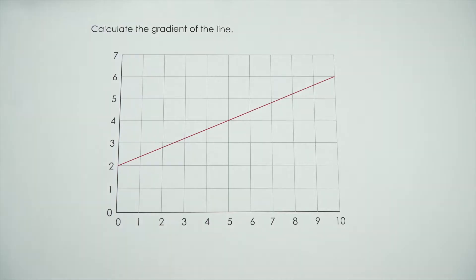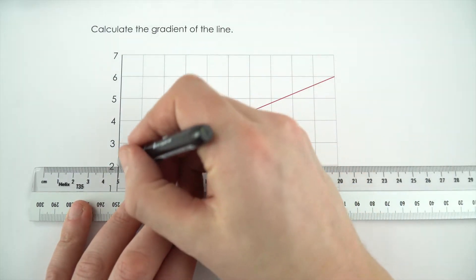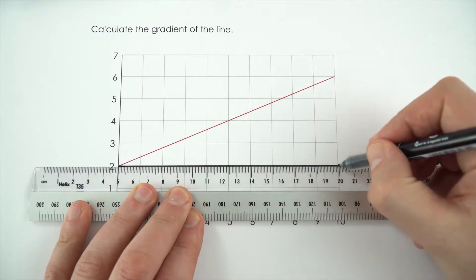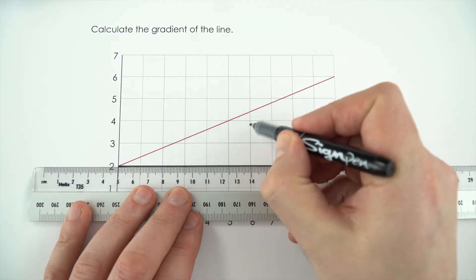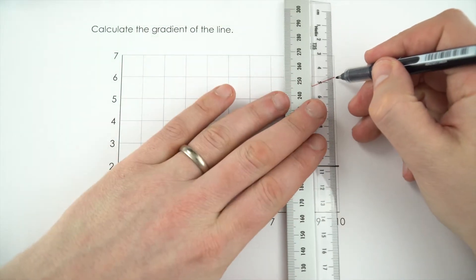So here we need to calculate the gradient of this line. Now my first step is just I'm going to draw a triangle across as much of this line as possible. I could draw a really small one but it would be harder to read my values. So I'm going to go as big as possible.